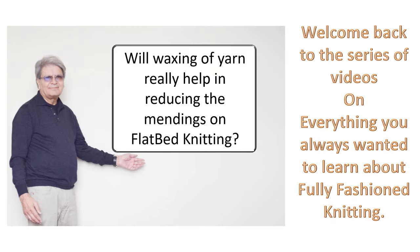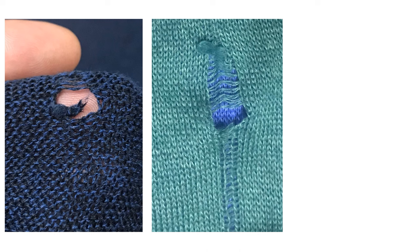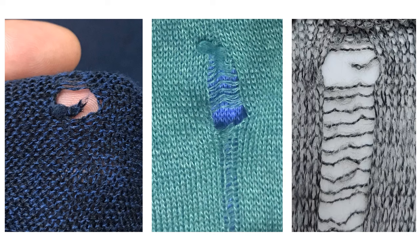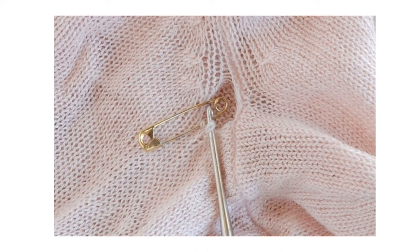In this video we will discuss if waxing really helps to reduce the occurrence of mendings on a flatbed knitting machine. We normally come across mendings on a flatbed knitting machine because of a slub or because of a knot that is too big to pass through the previously formed knitted loop, or because of a weak place in the yarn. Other reasons can be because of a drop stitch on the side of the knitted panel because of the yarn feeder parked too far away from the knitted area, or because of a faulty needle.